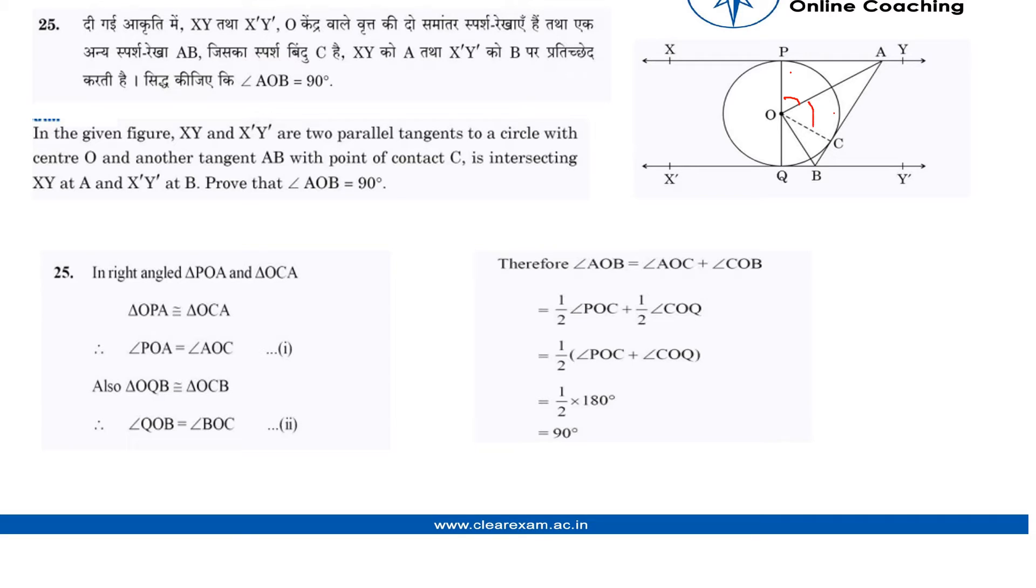Next, in triangle QOB and triangle BOC, using the CPCT method, angle QOB and angle BOC are equal to each other. As these two angles are similar, therefore this angle AOB...